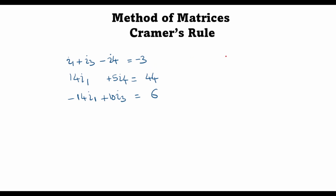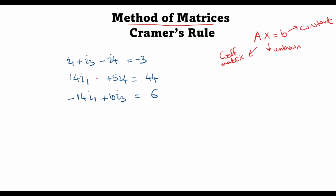In my previous lecture on loop current analysis we used the method of substitution, but here we'll use the method of matrices because substitution becomes quite cumbersome with so many variables. We'll solve this network by writing it in the form AX equals B, where X is the unknown vector of currents, A is the coefficient matrix, and B is the constant vector.